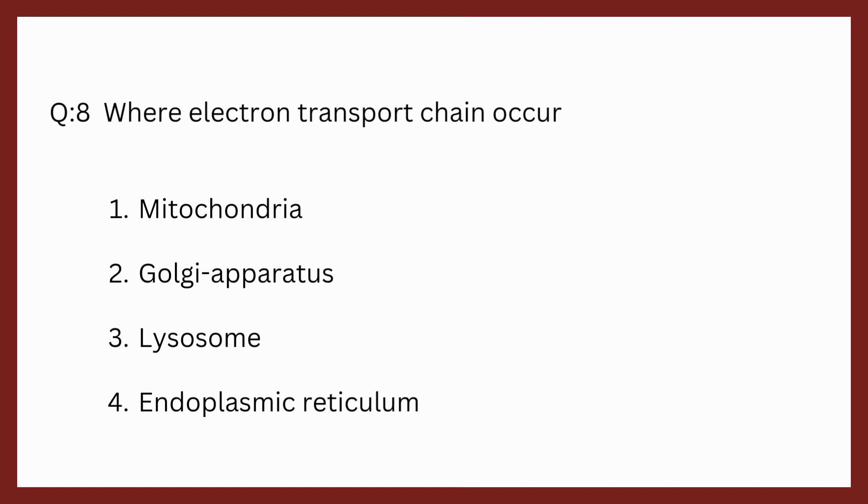Question 8. Where does electron transport chain occur? We know that electron transport chain only occurs in the mitochondria. The correct answer is mitochondria.